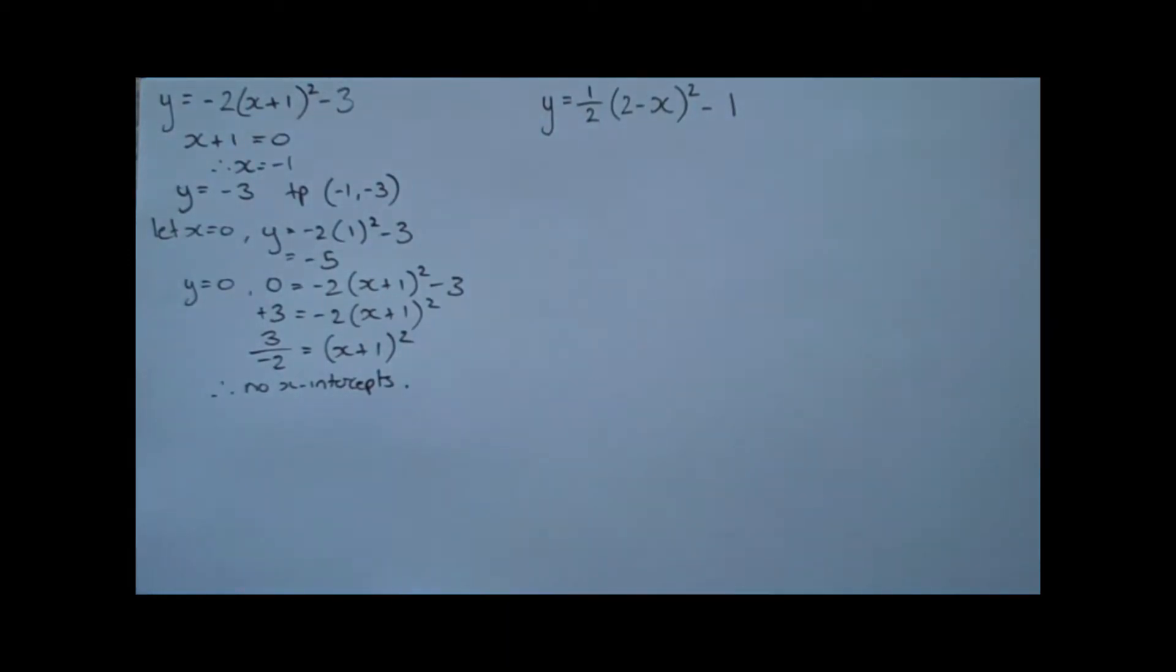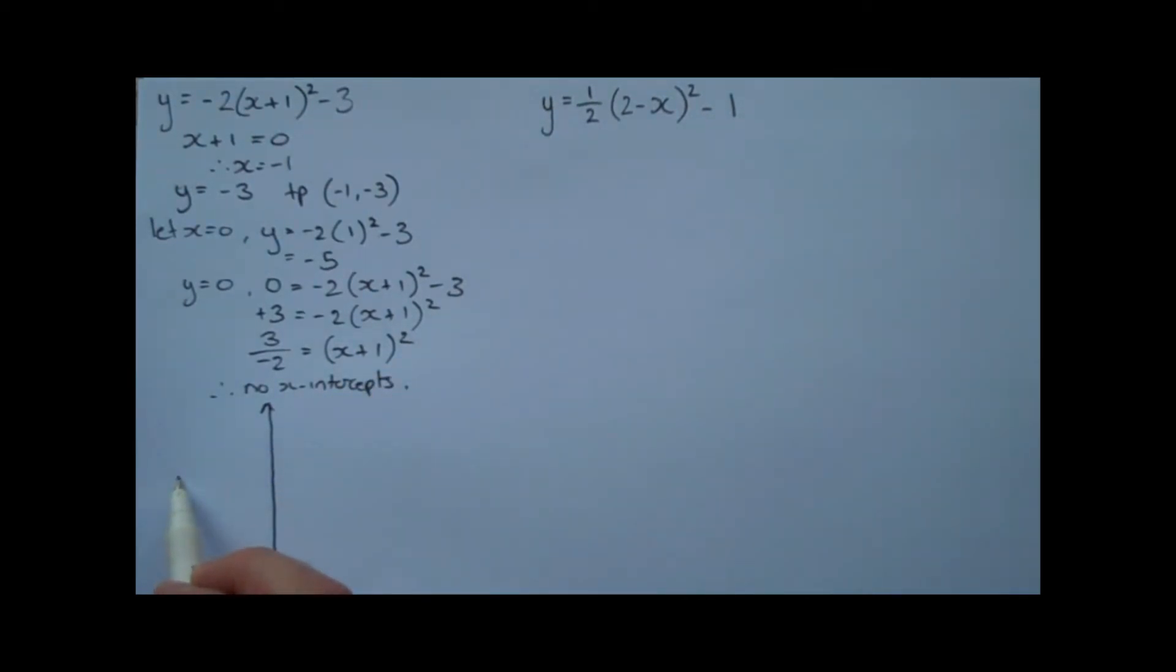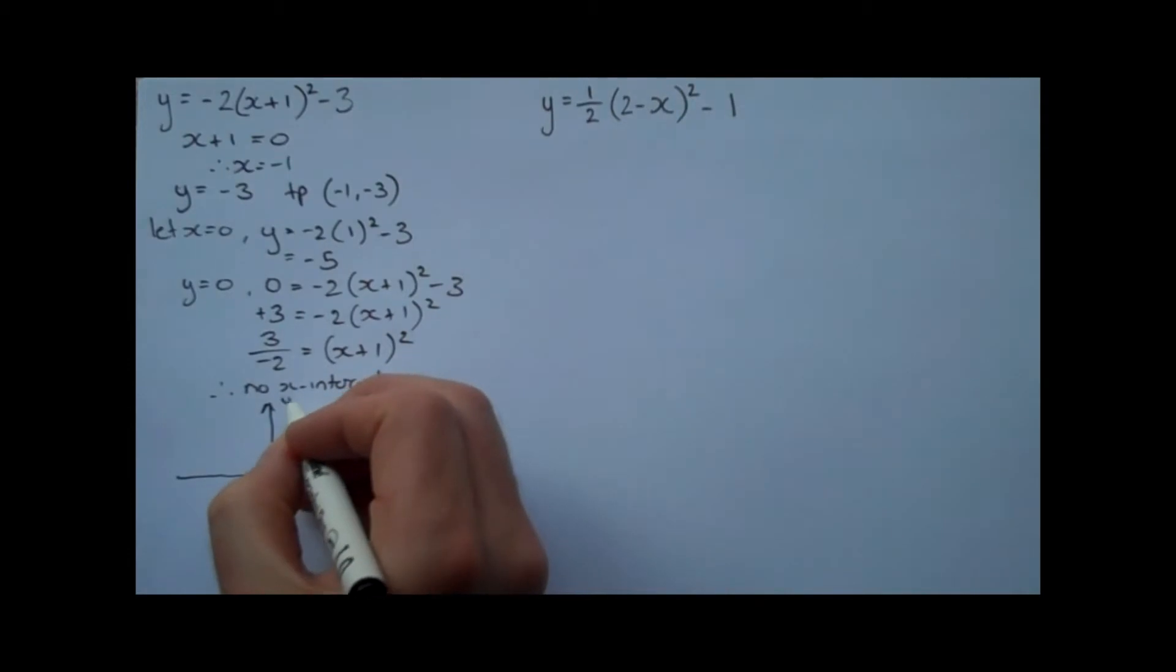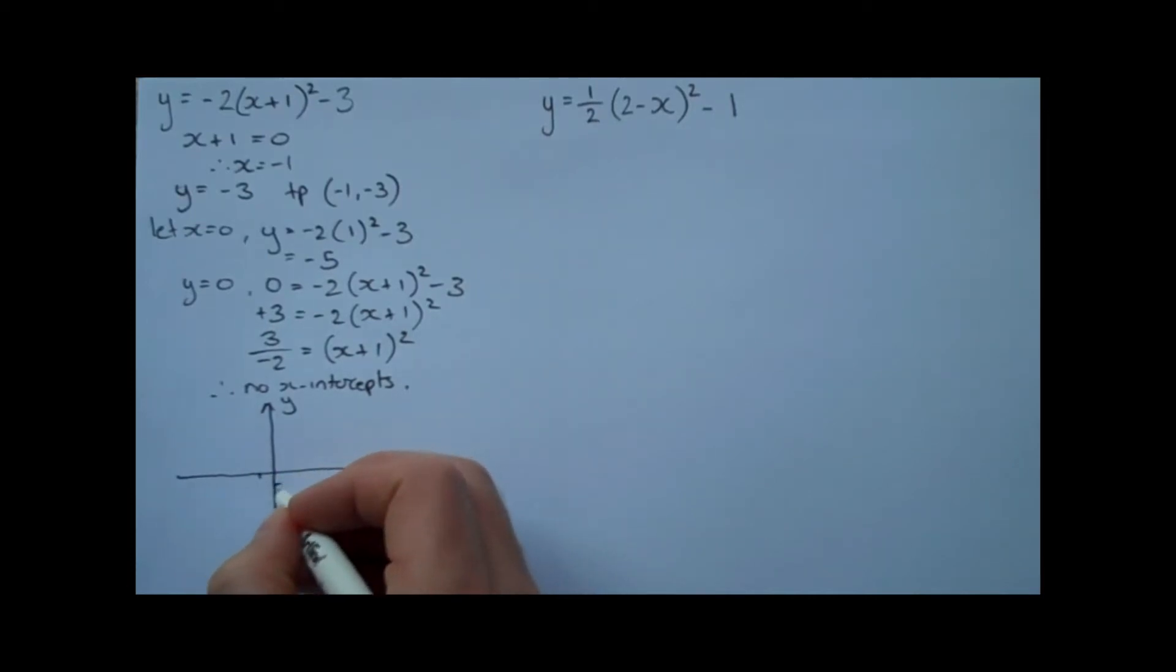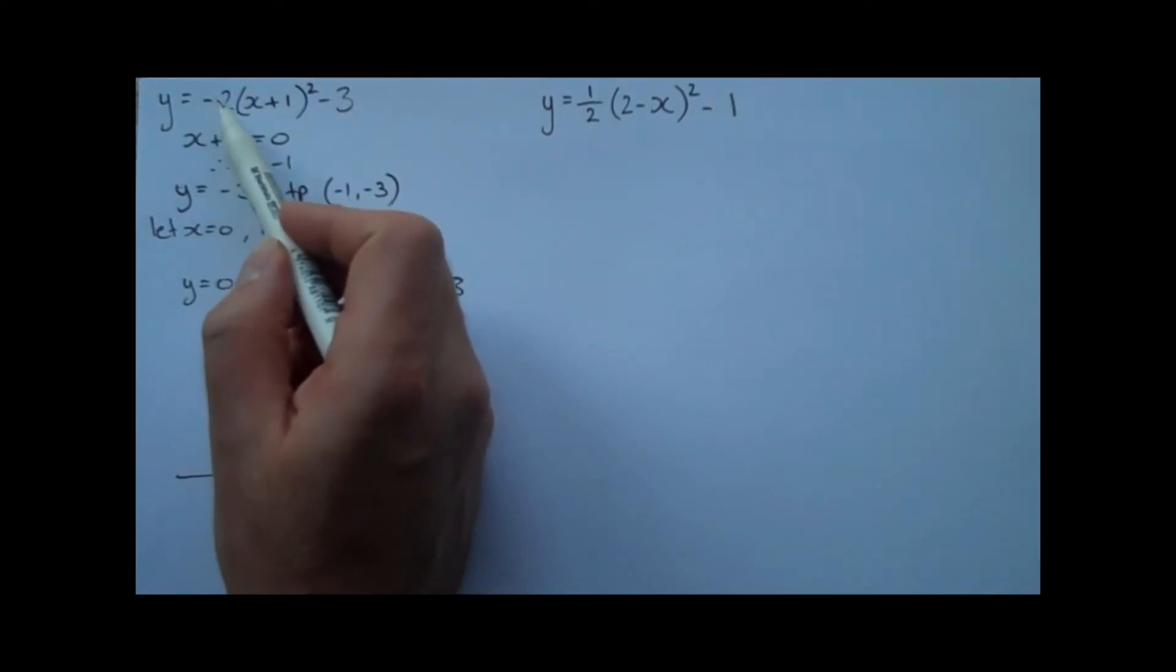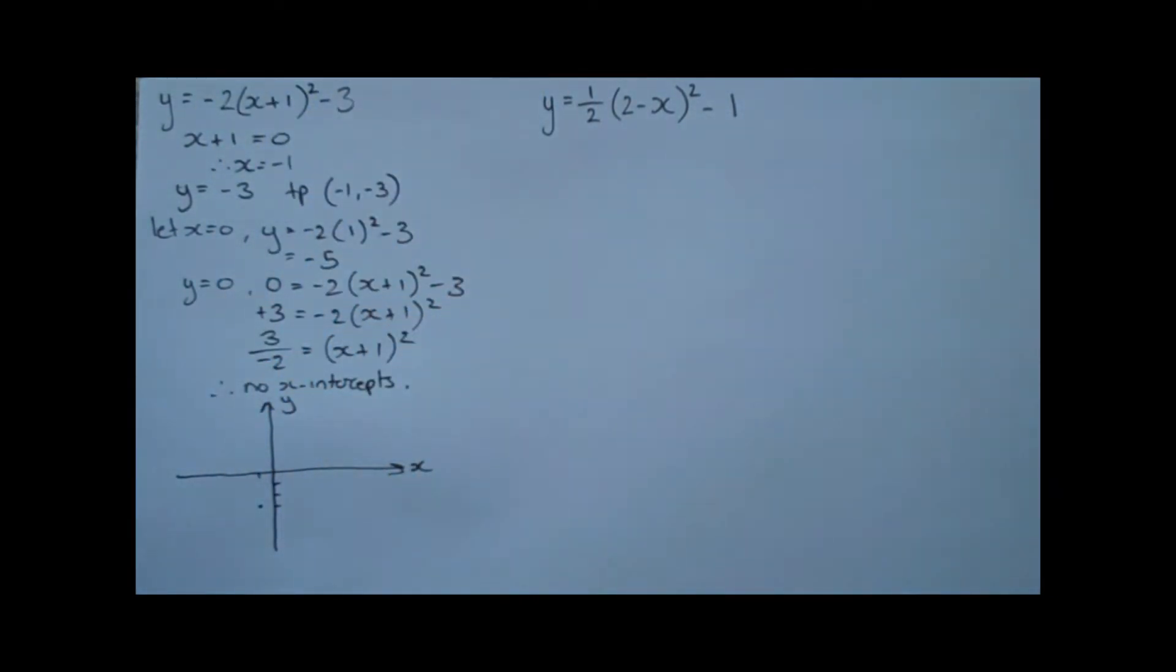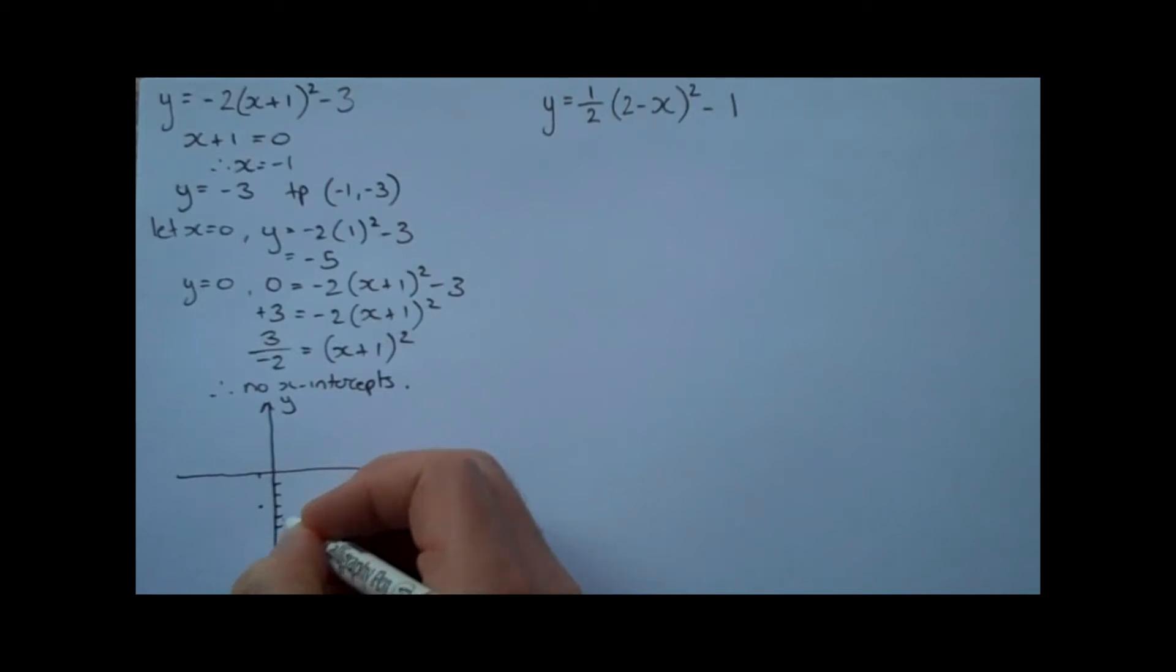Okay, so now we can go ahead and graph this thing. If we set up some axes, this is just going to be a rough sketch. I'm not known for my graph drawing abilities. So first of all, we'll put in our turning point, (-1, -3). We notice that there's a negative out the front. So we know that it's going to be inverted, or a reflection in the x-axis. So it's not going to cut the x-axis. It's got a y-intercept at negative 5. And that's not a very nice parabola, but you get the picture.